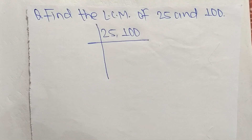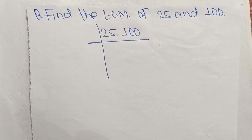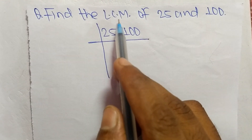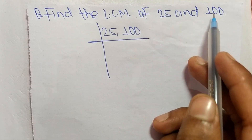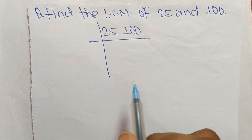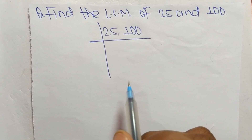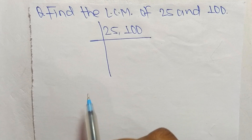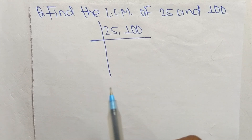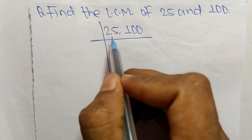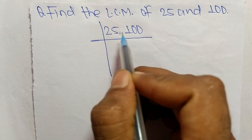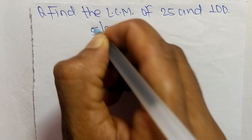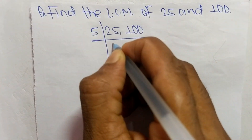Today in this video we shall learn to find the LCM of 25 and 100. To find the LCM, first we choose the lowest number that can exactly divide both 25 and 100, so the number is 5.